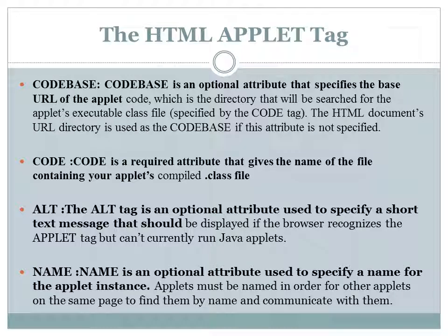The first optional attribute is codebase. Codebase specifies the URL of the applet — that is, the path of the directory in which the class file is stored. So codebase is an optional attribute that specifies the base URL of the applet code.